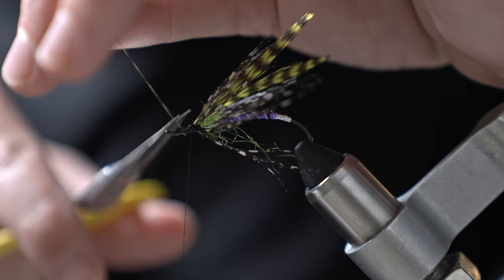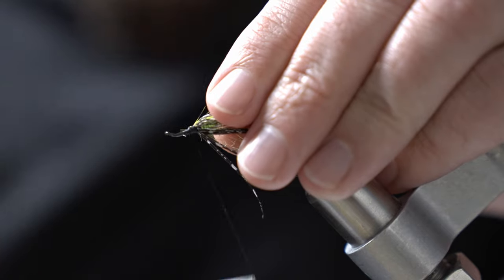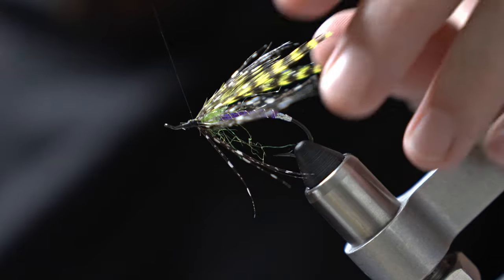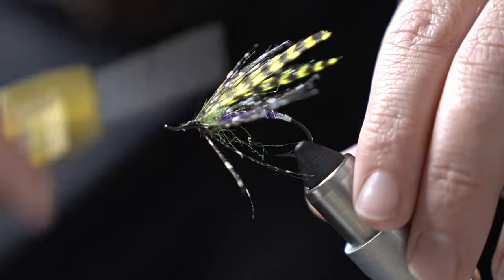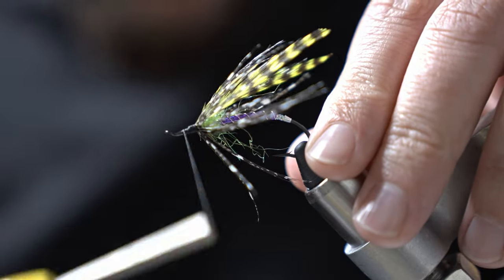So we're going to trim those bases off, give it quite a few wraps to make sure those aren't going to slip out. Again you could fold that tip back over and rewrap it again to really make sure it's secure.